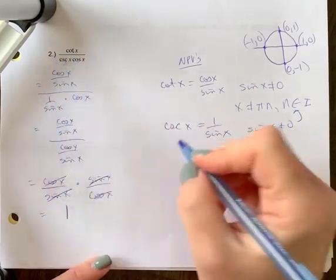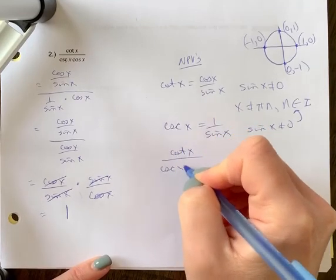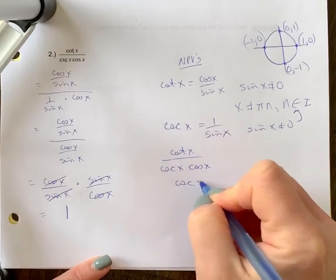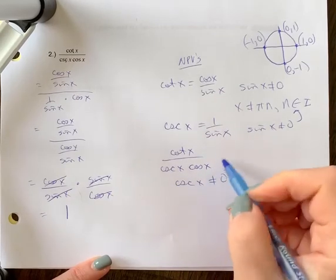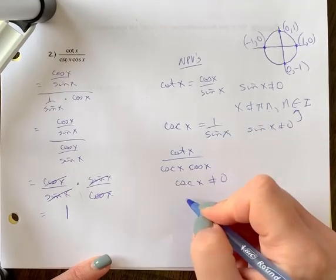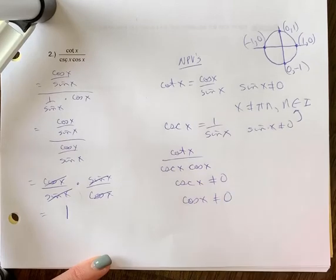Now we need to look at the fact that this is a fraction and that no denominator can equal 0. So that means we'll look at these two. So that would mean cos x cannot equal 0, which we've already kind of looked at here with sine x. And so there's not really further NPVs. But we do have the NPV of cos x cannot equal 0.